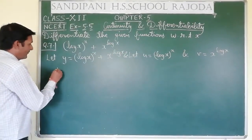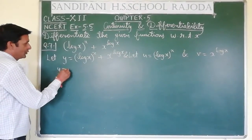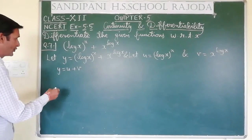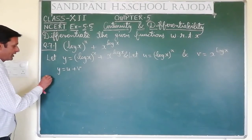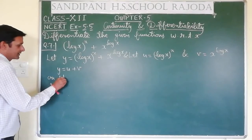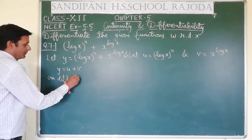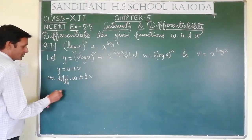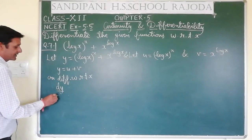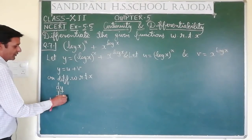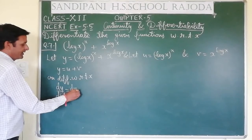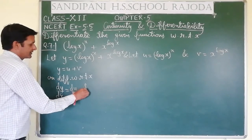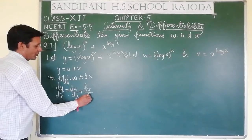So this will become y equal to u plus v. On differentiating with respect to x, this will become dy by dx equal to du by dx plus dv by dx, as we have done in our previous questions also.